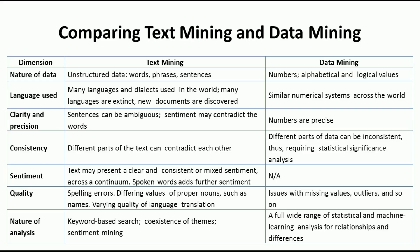Regarding language, any language may be used in textual data — English, Hindi, or anything — with no restriction. In data mining, a numerical system is used because everything is in number form. Regarding clarity and precision, sentences in text mining can be ambiguous, and sentiment may contradict the words. In data mining, numbers are precise — 100 means 100, with no contradiction. Regarding consistency, different parts of text can contradict each other, but in data mining the numerical data is consistent.